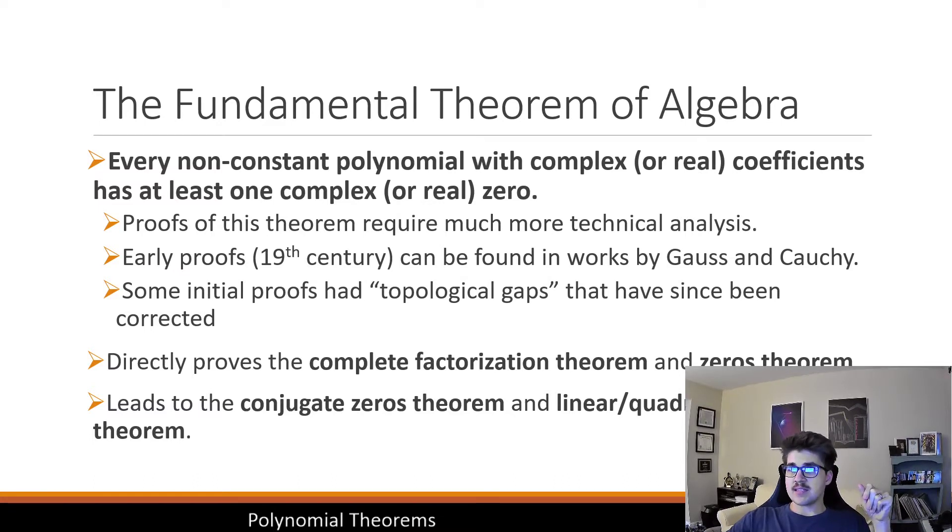So the fundamental theorem of algebra says that every non-constant polynomial with complex or real coefficients has at least one complex or real zero. Usually if you look it up in a textbook, it won't specify that it could be real, but basically in this case we're dealing with polynomials that could have really weird coefficients. It could be rational, it could be irrational, it could be complex, basically any polynomial under the sun using any type of number, doesn't even have to be integers, what it says is that it must have at least one zero to it.